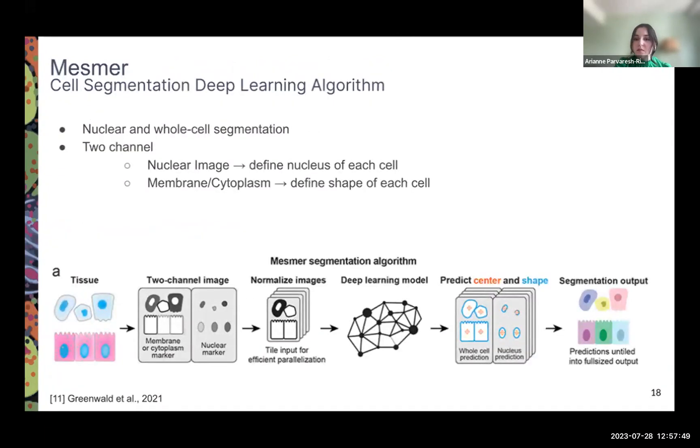What I worked on this summer was understanding the applications of MESMER, which is a deep learning model in cell segmentation. MESMER is a deep learning algorithm from the DeepCell library, and it performs both nuclear and whole cell segmentation. It has two channels: one is the nuclear image, and the other one is the cytoplasm and membrane image.